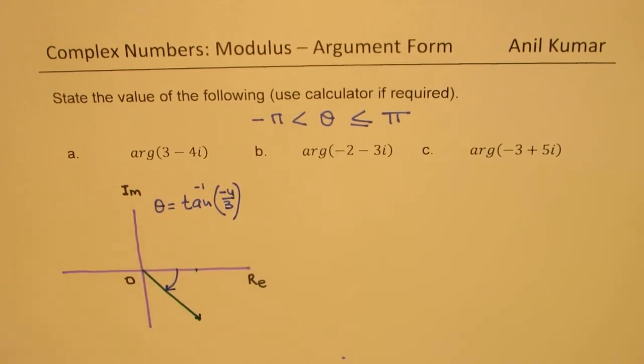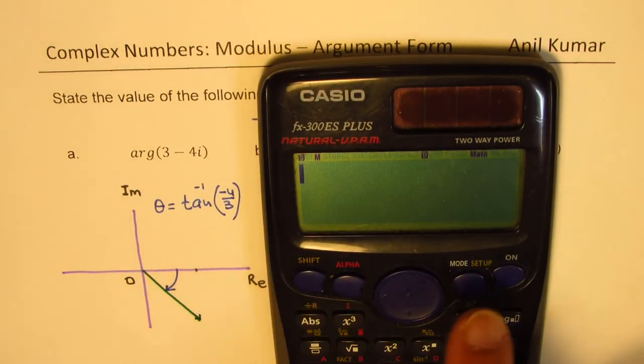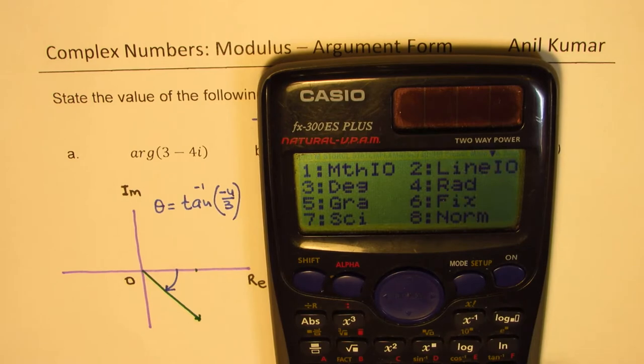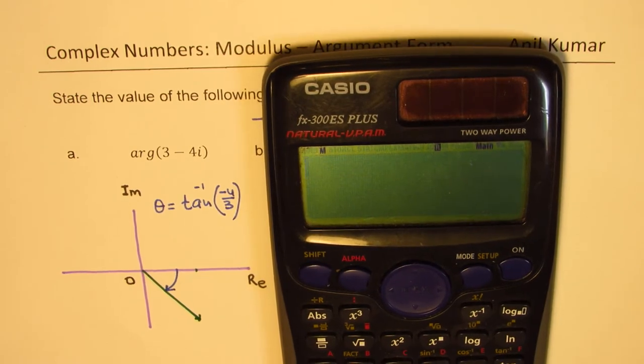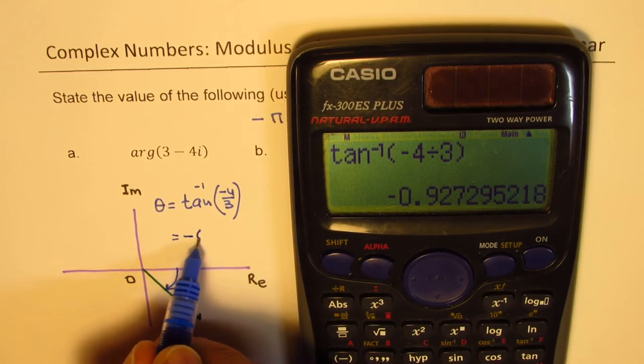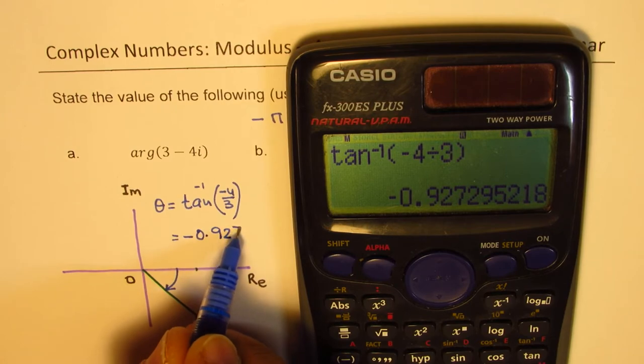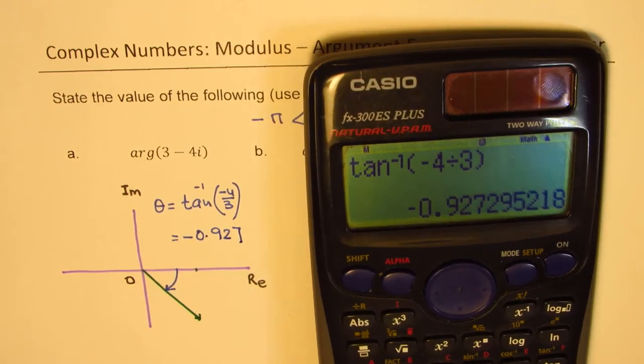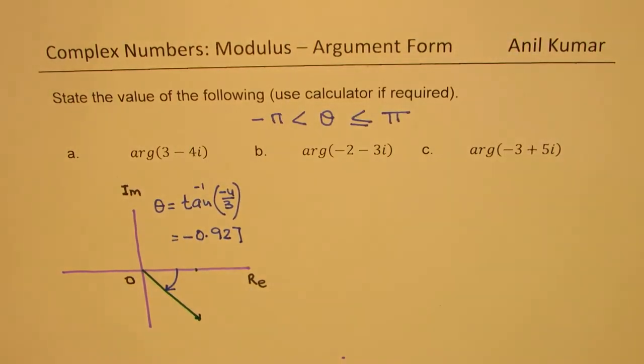So set your calculator to radians. That is the first thing. All the answers should be given in radians. And shift tan inverse minus 4 divided by 3. So minus 4 divided by 3 gives me minus 0 point... So we get the answer as minus 0.927. So we are going to round it to 3 significant places.